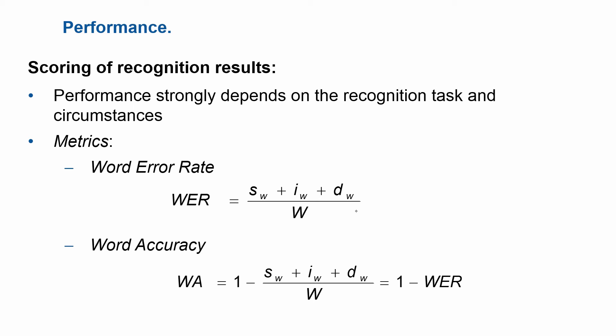You count the number of those errors and divide it by the overall number of correct words in the transcription. And you can also calculate one minus this in order to come to the word accuracy.